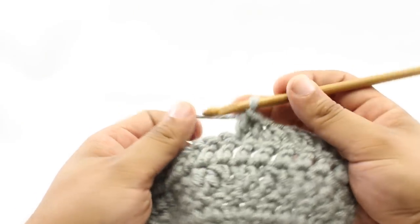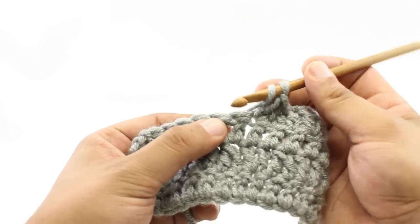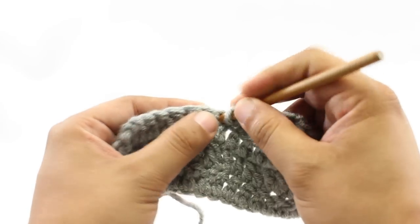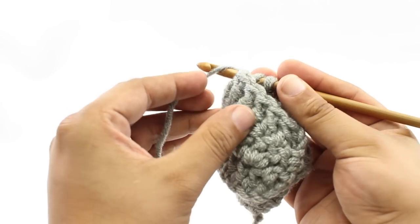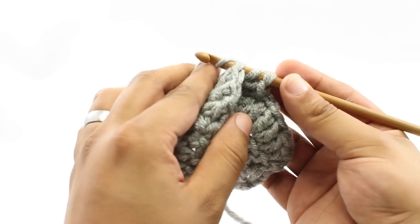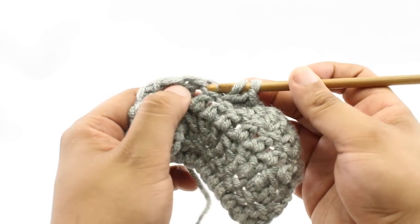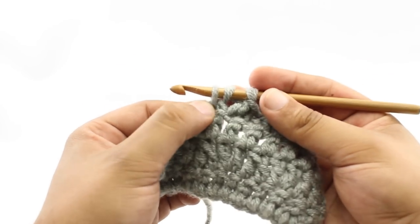Step one, we're going to yarn over our hook. Step two, we're going to insert our hook into the next stitch. For step three, we're going to yarn over. And step four, we're going to draw that loop through the stitch.